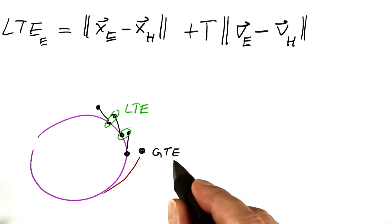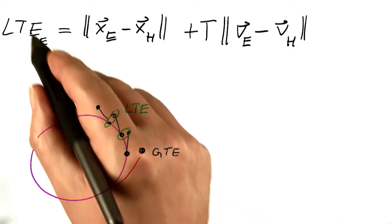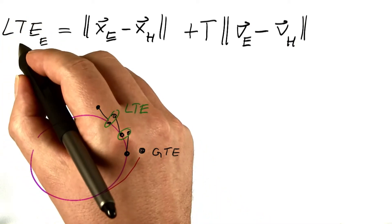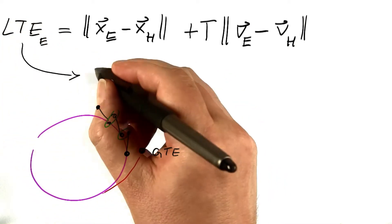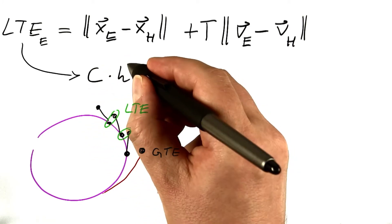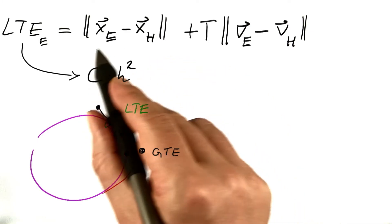We know that the GTE, the global truncation error for Euler's method, is a constant times the step size. One can also show that the local truncation error is another constant times the step size squared.